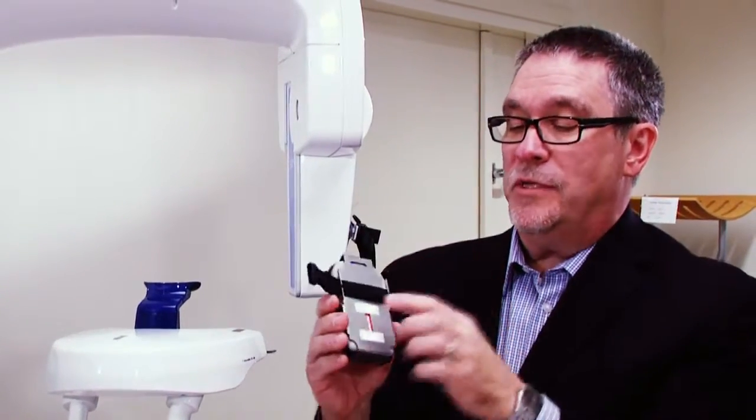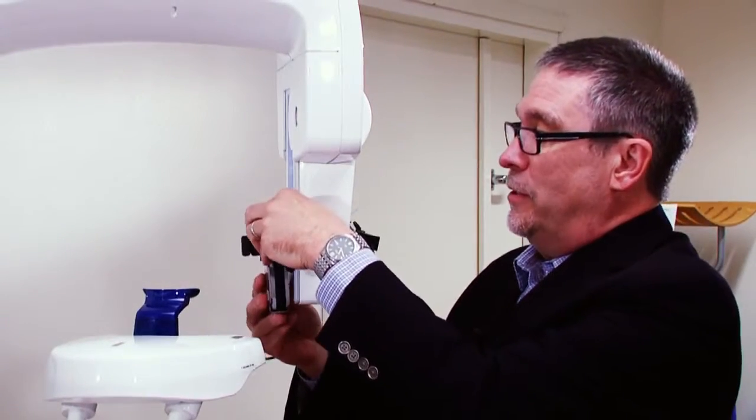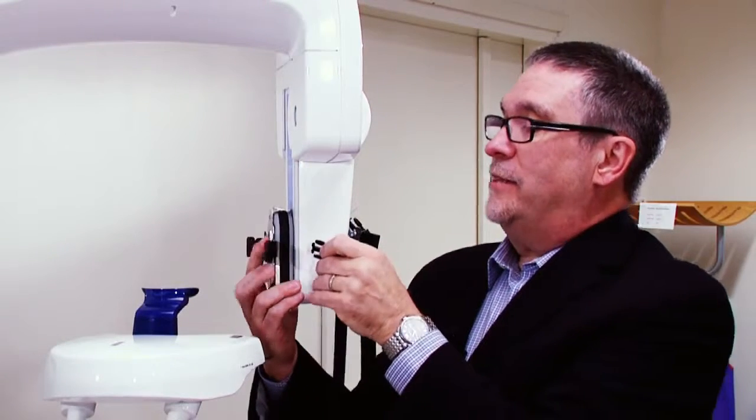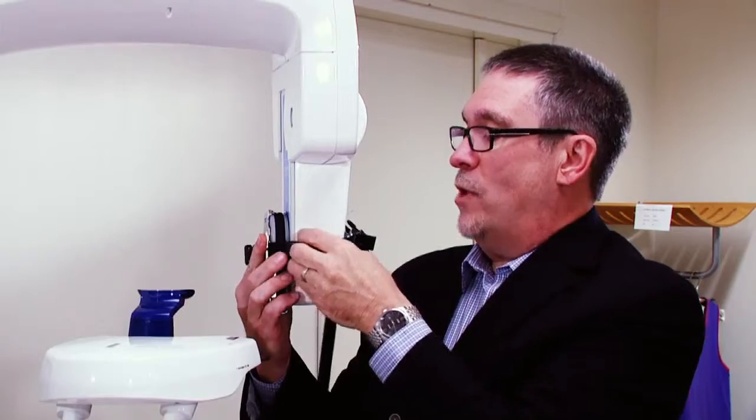Once that's done, you take your Piranha, with this side out facing the x-ray beam, or the tube, place it like so, and take the adjustable strap, and connect it to the Piranha holder.